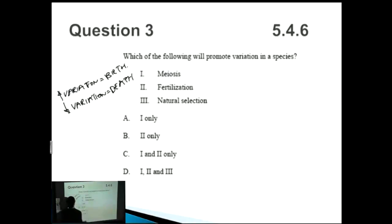So which ones of these are to do with birth? So meiosis? Yep, absolutely correct. Fertilization? Yep, absolutely correct. Three, natural selection? No, that's not correct because that's actually the opposite. That's to do with decreasing variation. So one and two correct, therefore it's C.